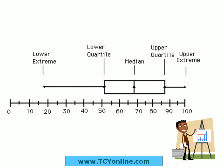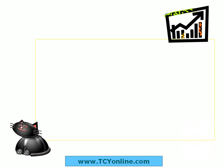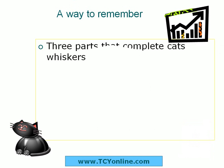This is the diagrammatic representation of the box and whisker plot showing total matrix scores. Now here is an easy way to remember this — there are three parts that complete a cat's whisker.